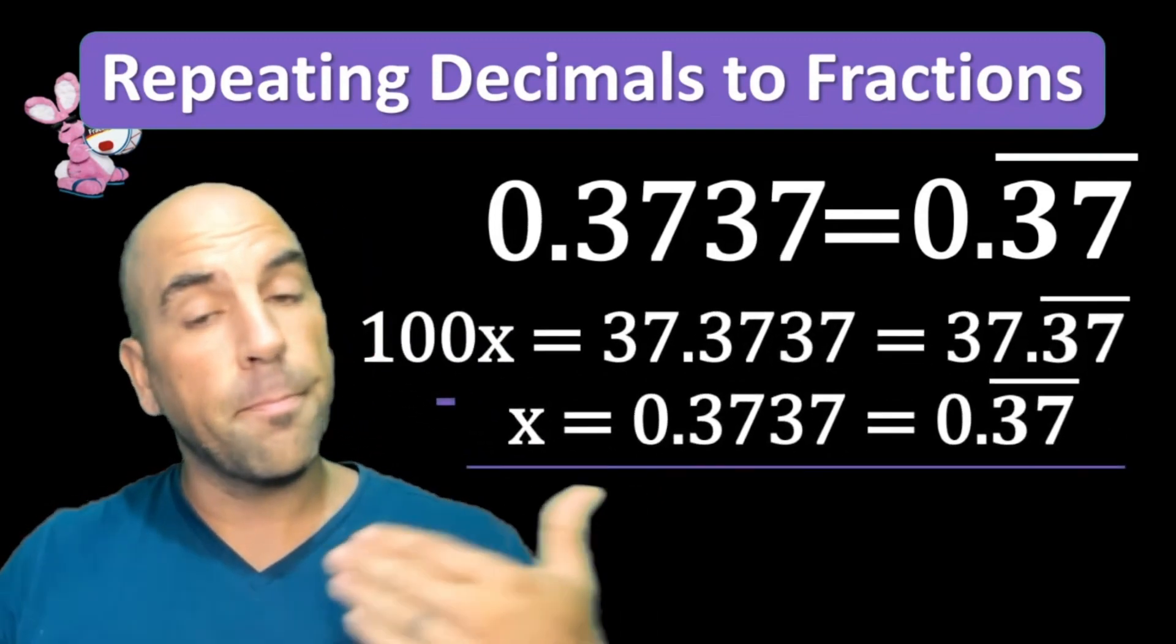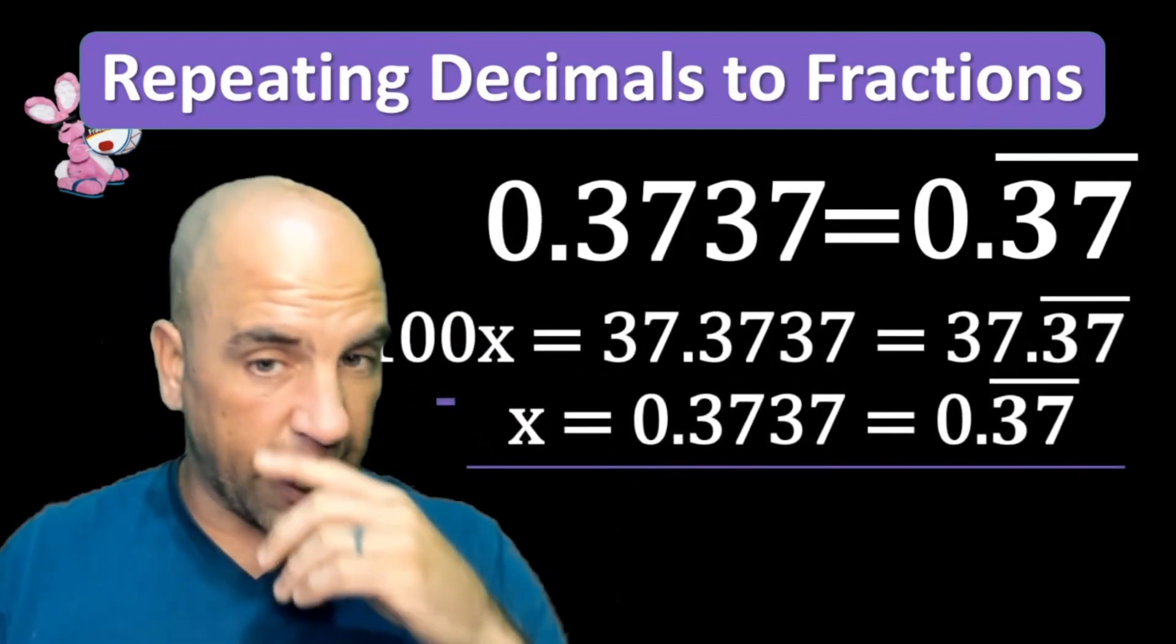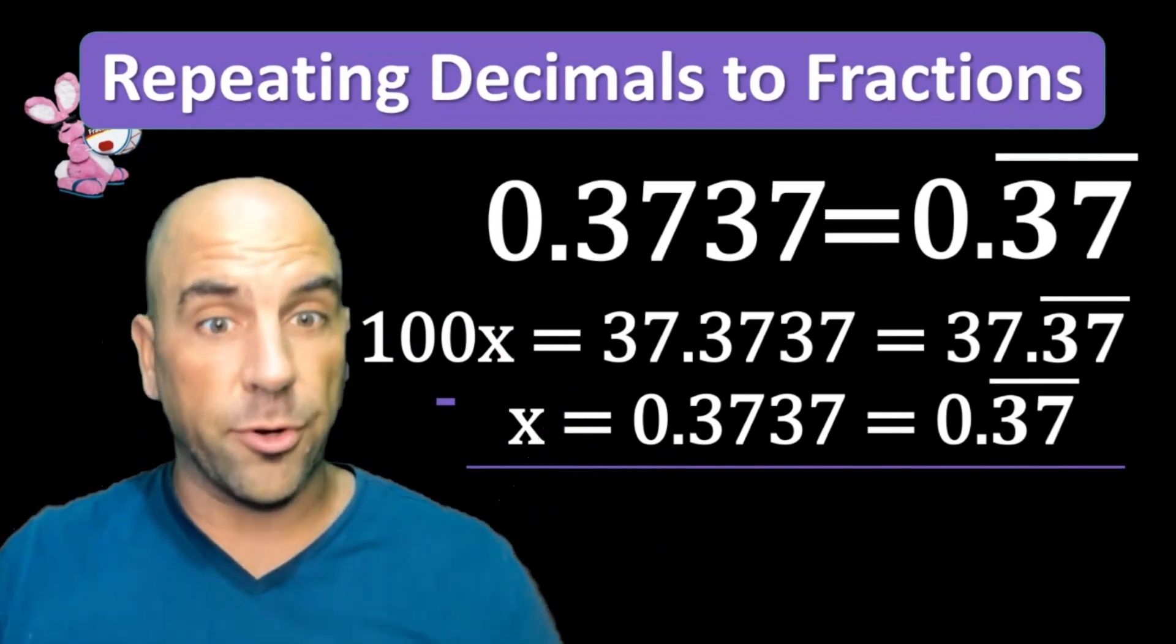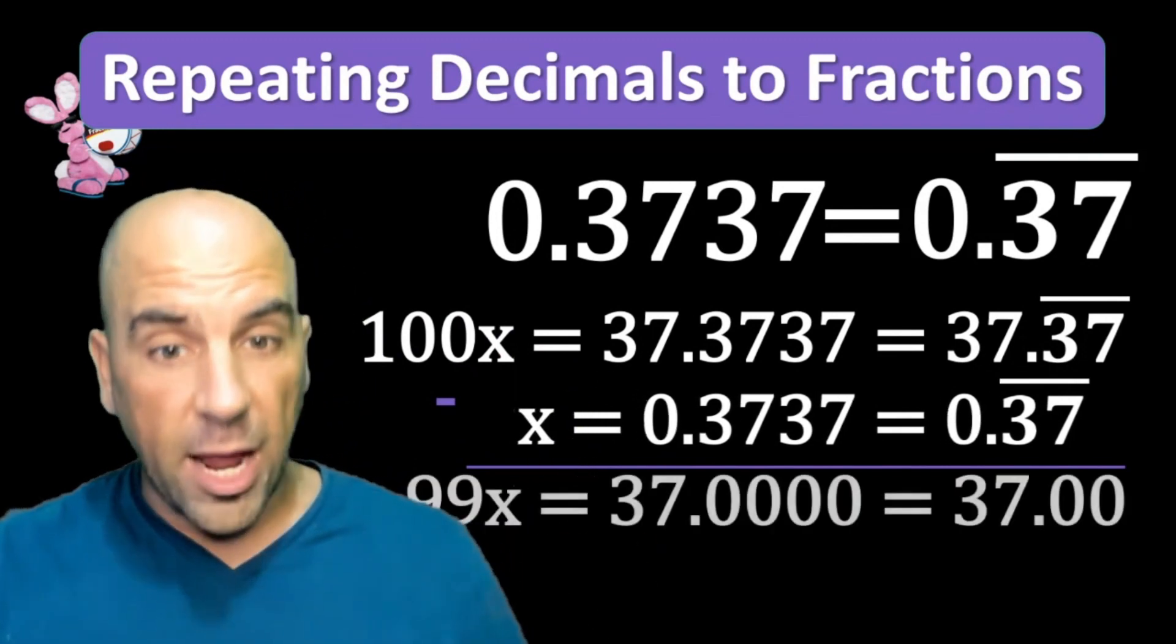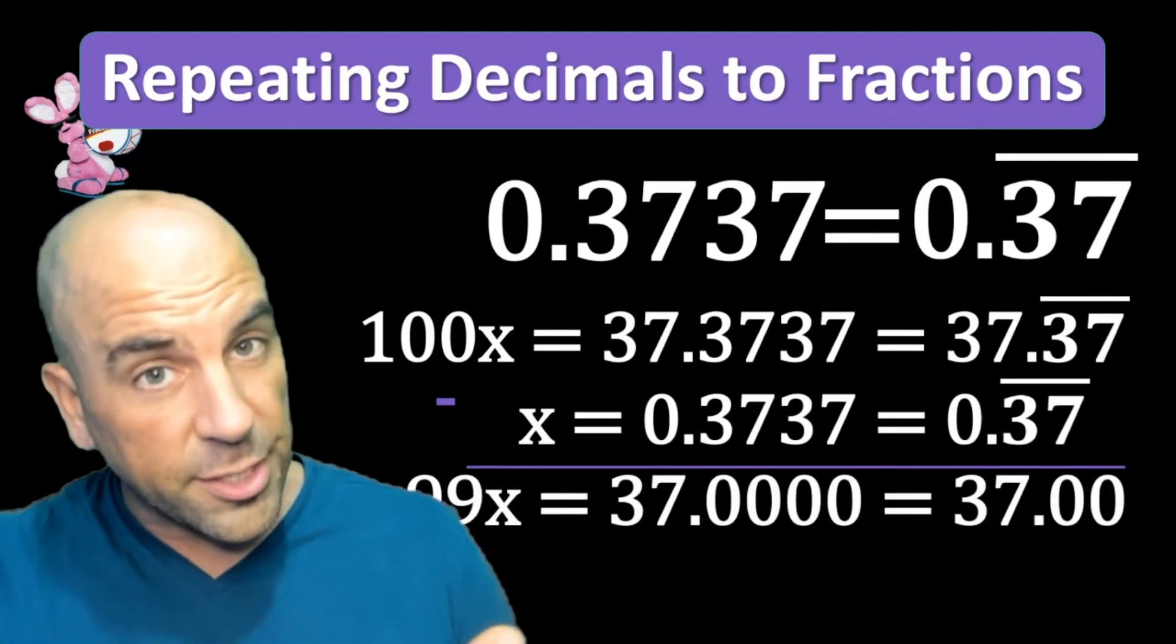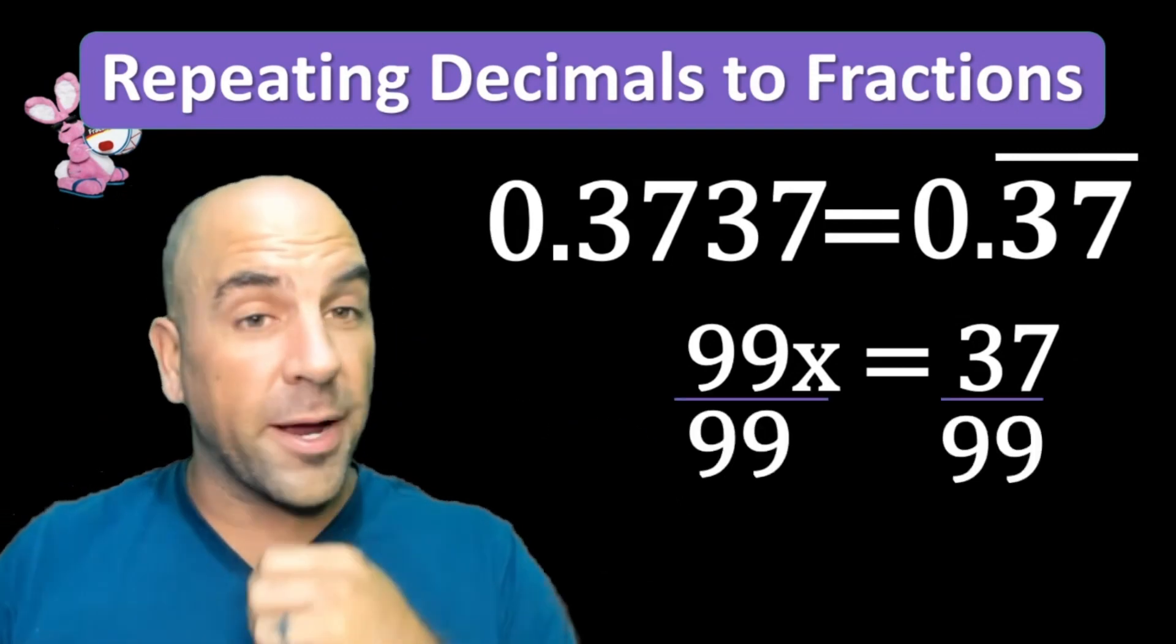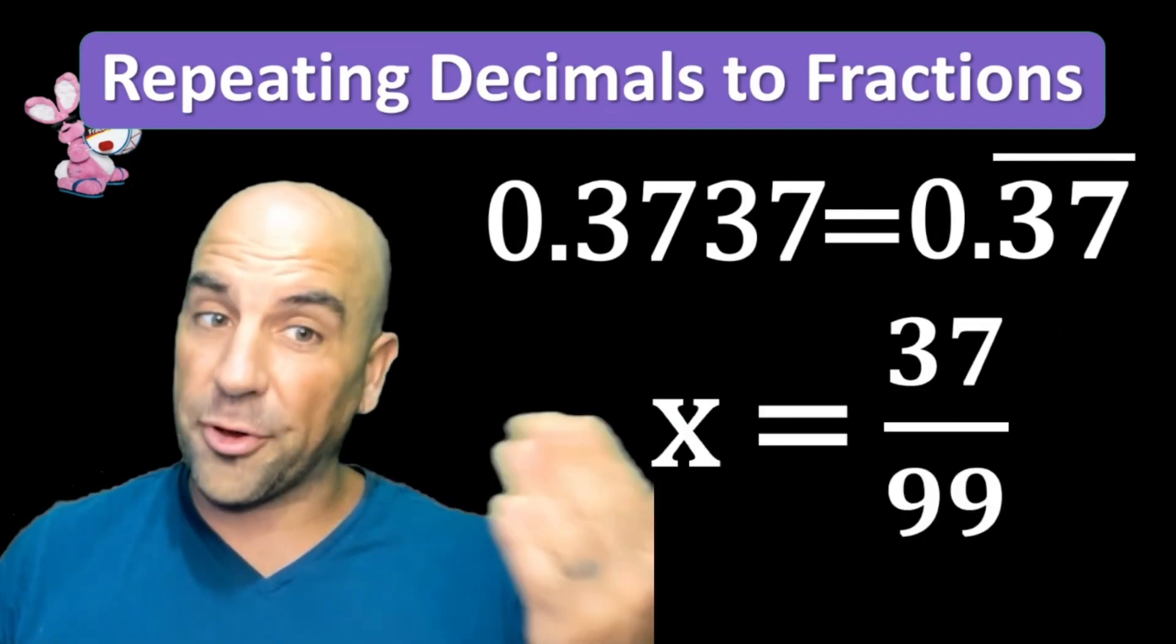100x minus x gets rid of that repeating 37. So we see 99x equals 37. Let's divide both sides by 99 and we have our fraction: 37/99.